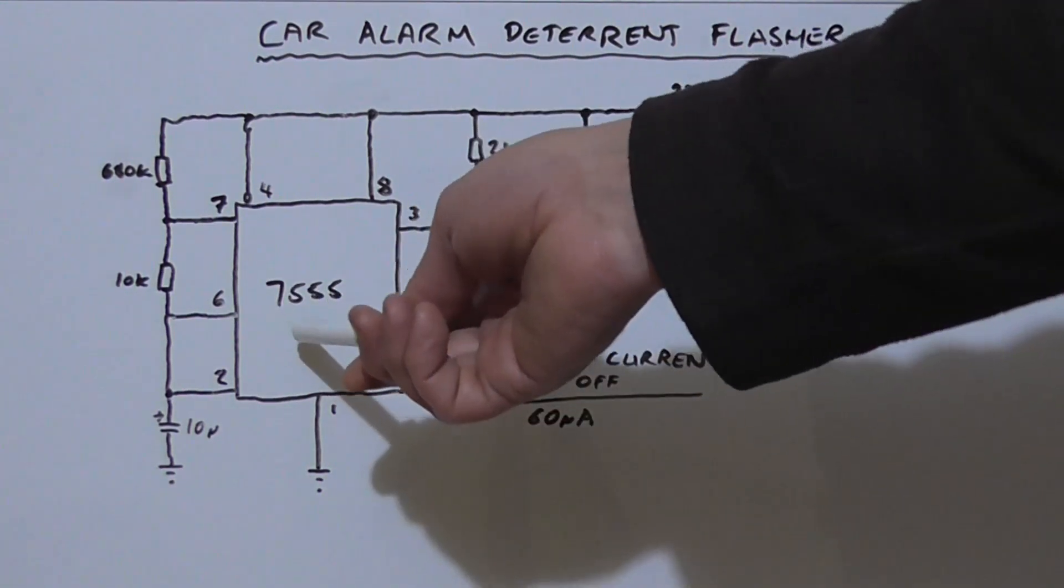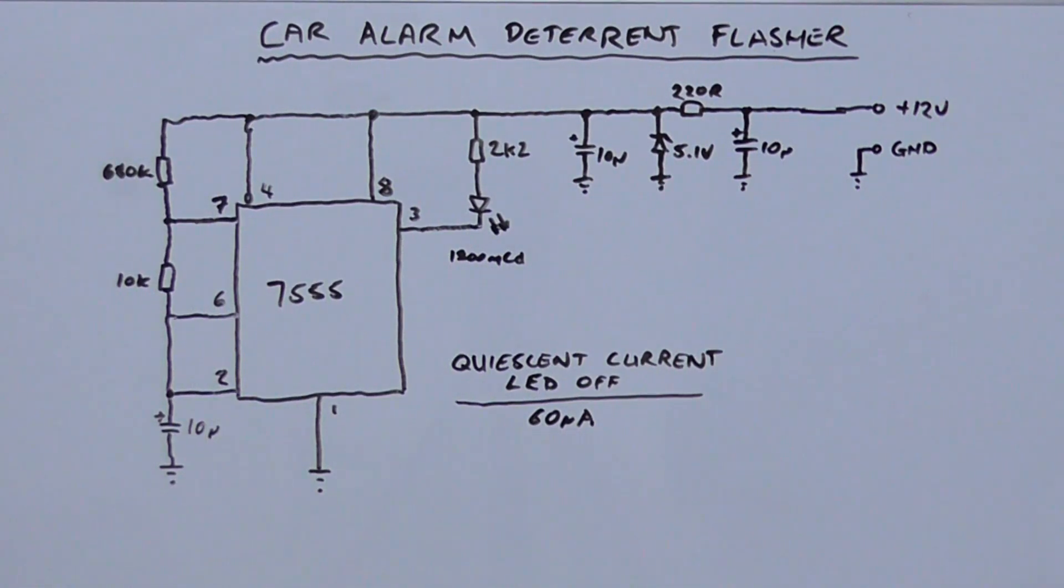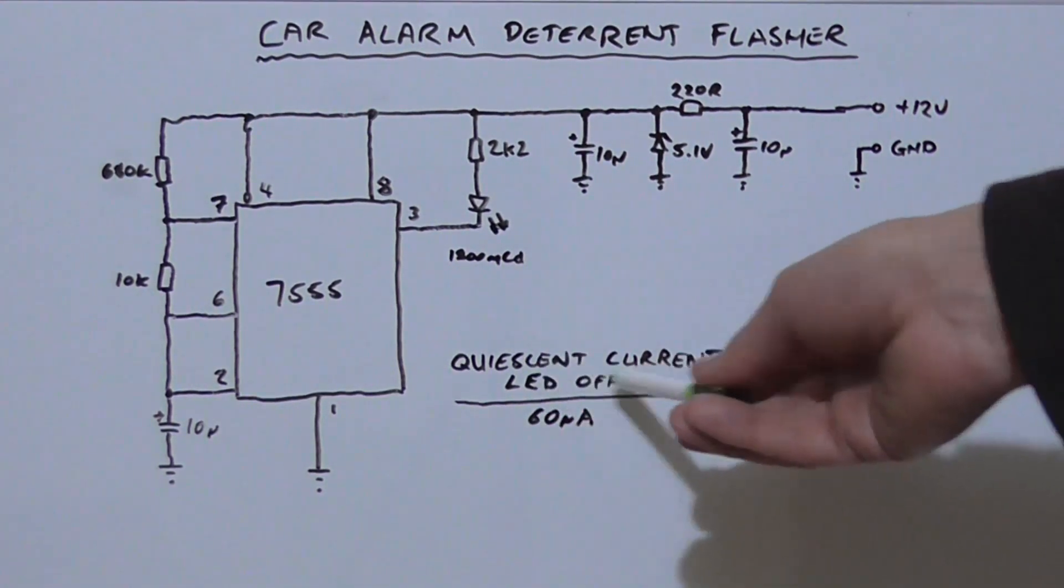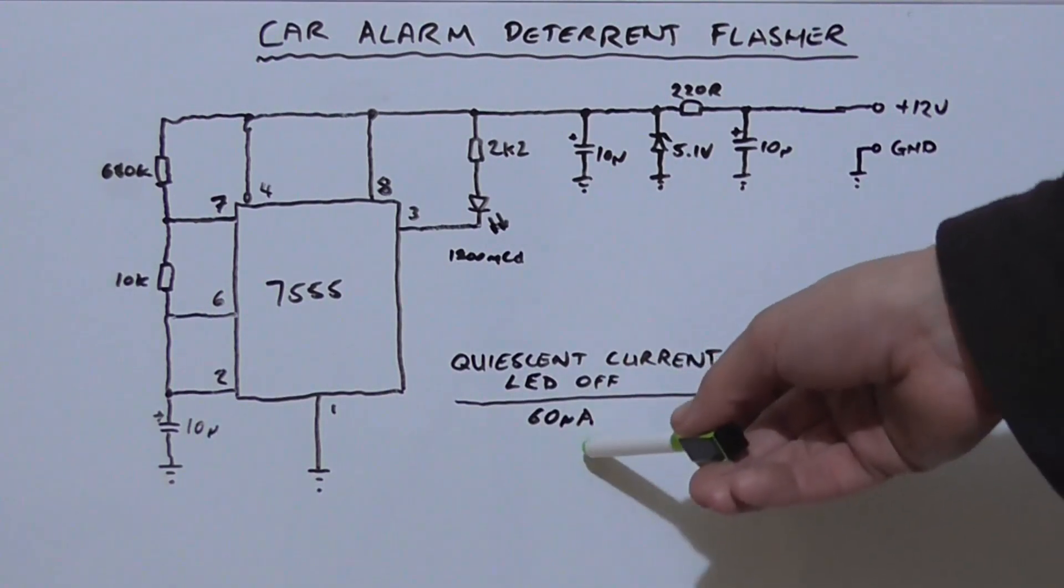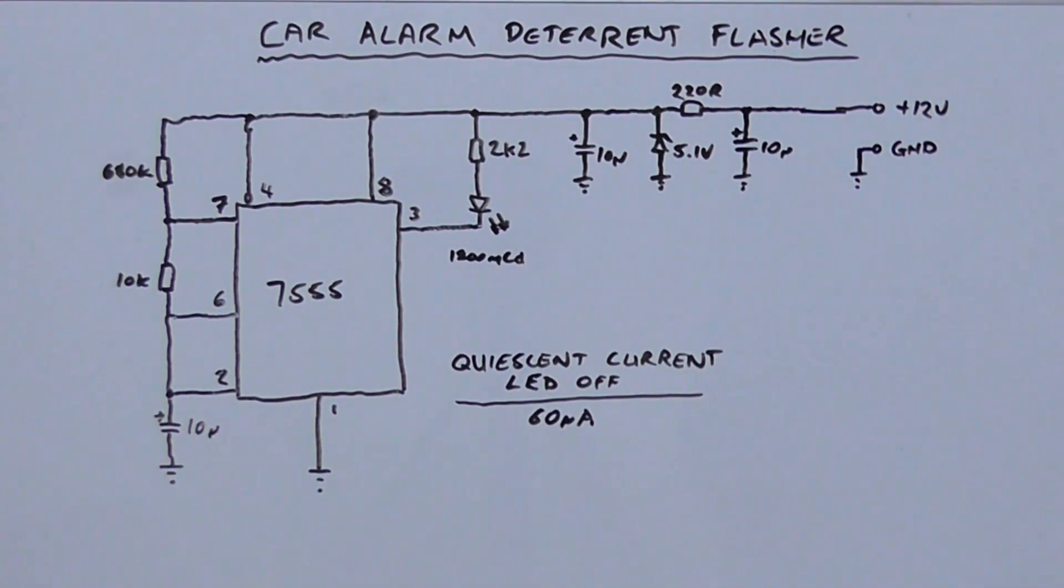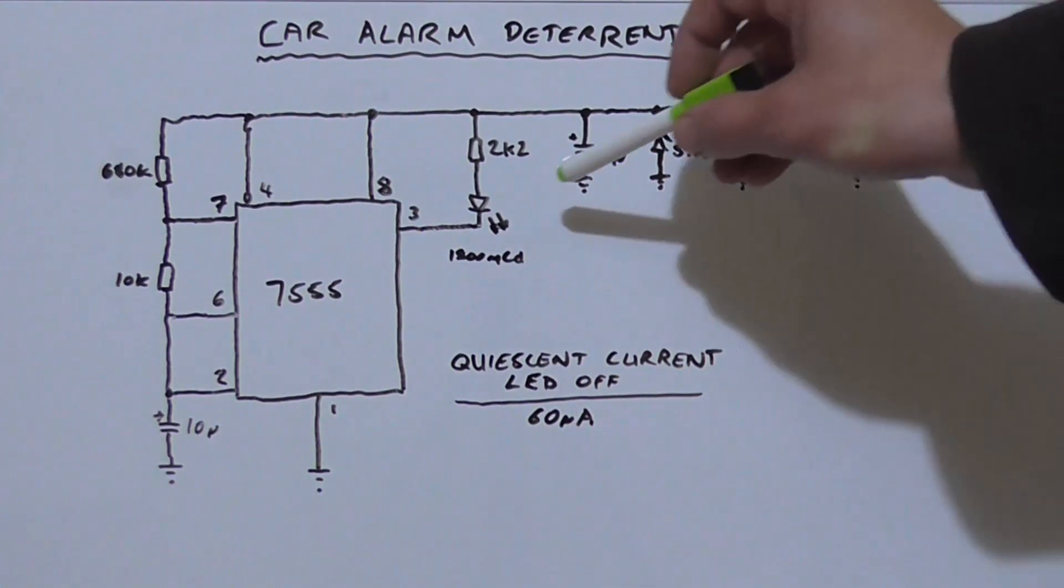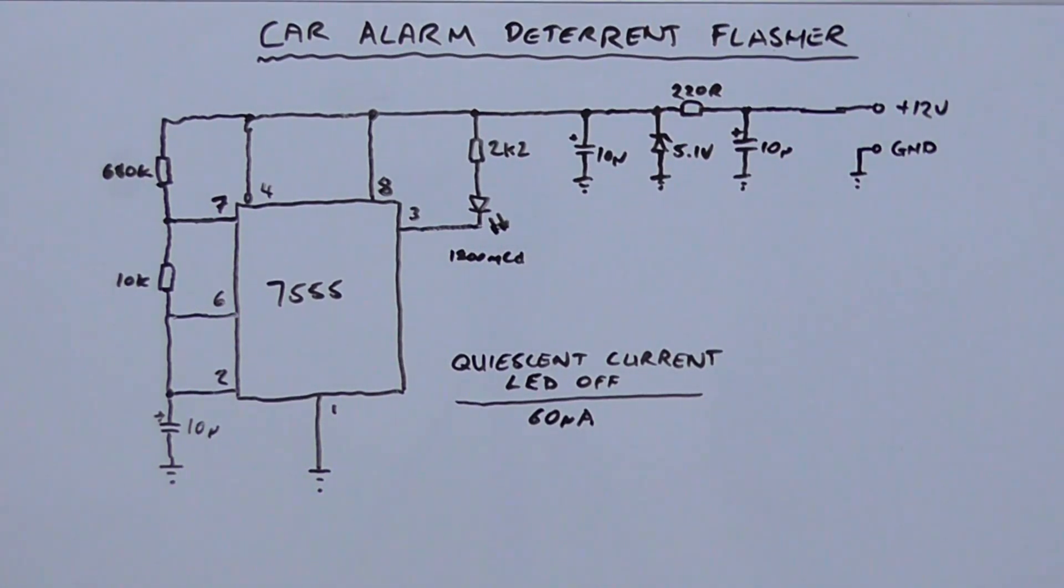We'll notice straight off that we're using a 7555. Now, there's a reason for that. The quiescent current of this particular configuration when the LED is off is around 60 microamps. With a normal 555 timer, that's going to be more like 2mA. You may be thinking that's not really a significant difference, but you've got to look at it over when this thing is turned on for like 12, 15 hours at a time. Of course, the LED when that comes on is going to draw a little bit more current, probably about 5-10mA. But it's not going to make your battery in your car go flat overnight.